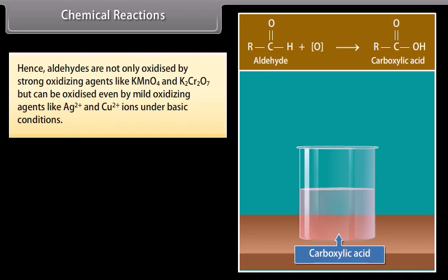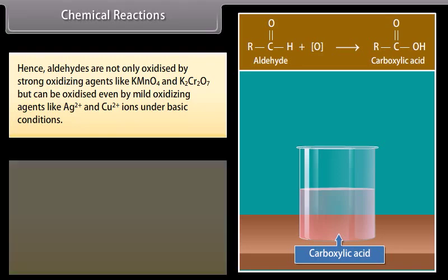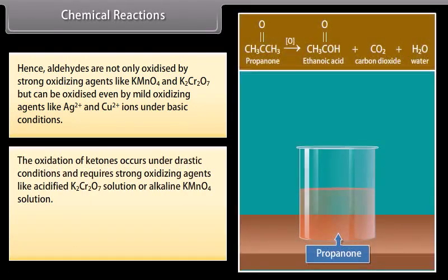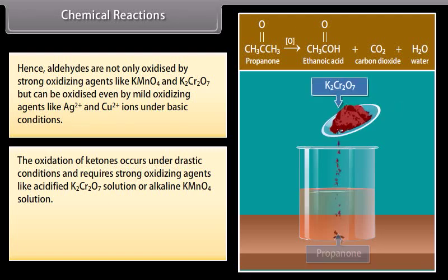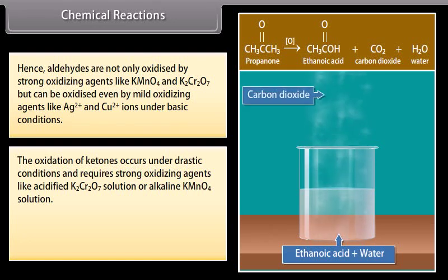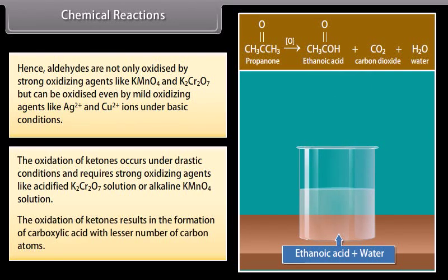The oxidation of ketones occurs under drastic conditions and requires strong oxidizing agents like acidified potassium dichromate solution or alkaline potassium permanganate solution. The oxidation of ketones results in the formation of carboxylic acids with a lesser number of carbon atoms.